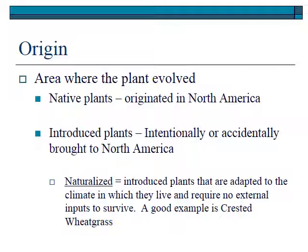There's a special term among introduced plants — naturalized plants. These are plants that were introduced but are not particularly aggressive, yet they're so well adapted to our climate that they live as if they were native. They survive without any human input and don't look terribly aggressive. A good example in Idaho is crested wheatgrass.